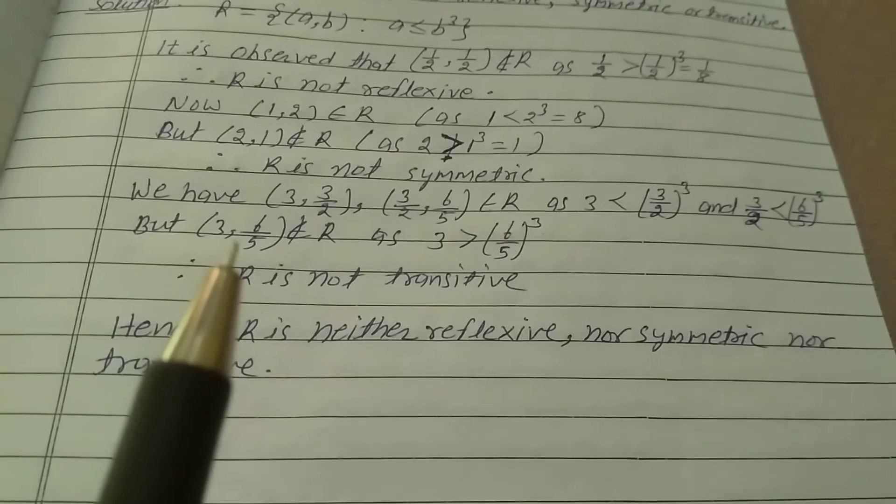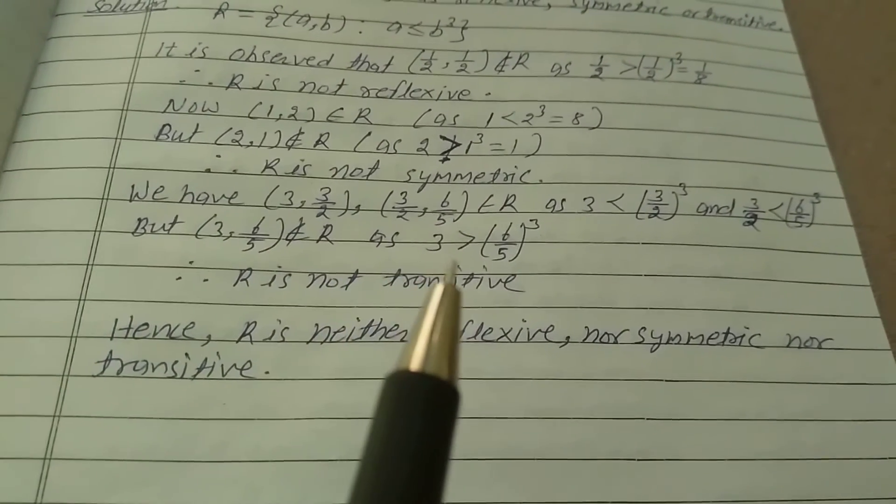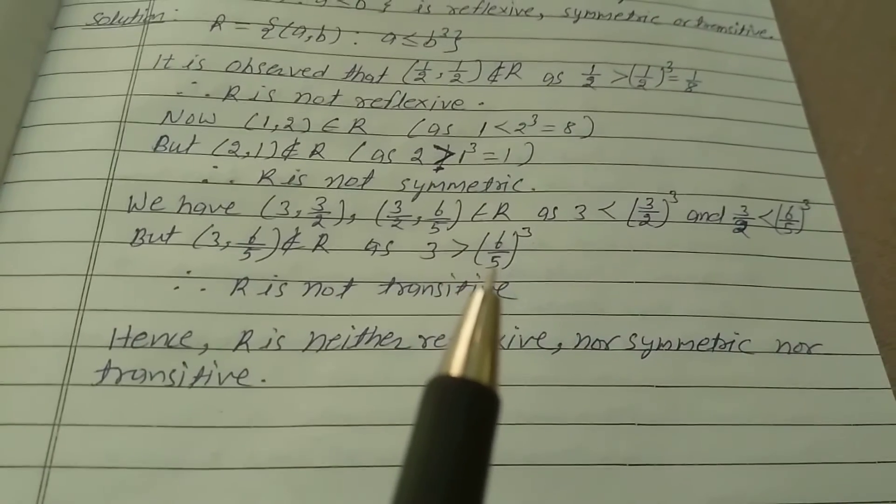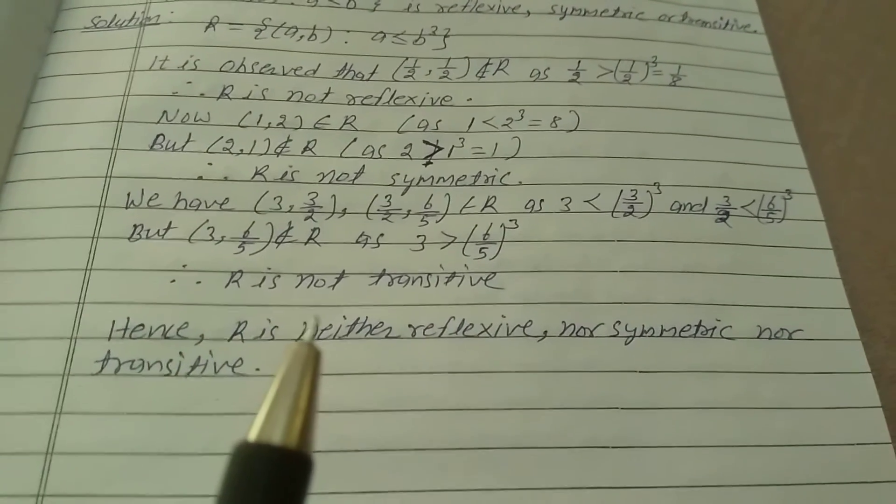But (3, 6/5) does not belong to R as 3 is greater than (6/5) cube. Therefore, R is not transitive.